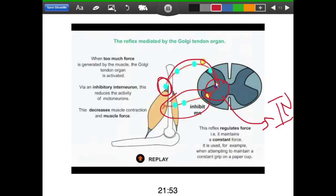So as it says right here, it's used for maintaining a constant grip on a paper cup. But also, it can be a protective mechanism. So imagine that you're lifting something really heavy in the gym and you're at your max weight—it could be pretty dangerous for you to be contracting too hard; you could tear a muscle or something, right? So this mechanism is going to cause you to basically stop contracting and you're going to drop the weight. So in this way, it's a bit of a protective mechanism as well.